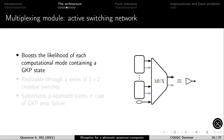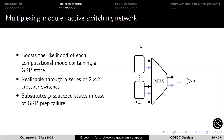GKP states are produced with low probability, but that probability can be boosted via multiplexing. You can have a tree of 2×2 switches that shuttle a successful event to the output from a number of GBS devices. The multiplexing network is also where, if none of the devices succeed, you can substitute in a squeezed state since that stitches into the cluster in exactly the same way.